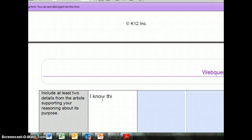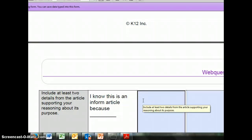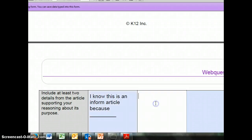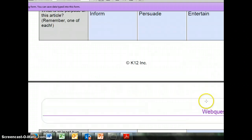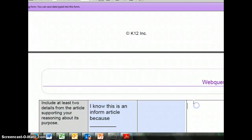Now you're almost done but you have one step left. That's going to be to scroll down one more box and it says include at least two details from the article supporting your reasoning about the purpose. Okay what that means is I know this is an inform article because, and you're gonna tell me why and you're gonna give me two reasons. And then you're gonna go to this box and tell me why this article is persuading me. And so remember persuading is somebody is trying to convince me to do something or believe in something or a cause. So what are you trying to persuade me of and how do I know that you're trying to persuade me? And then our last box, remember, is entertain. So how do I know that this is just entertaining, that this is just a fun article to read just for fun?